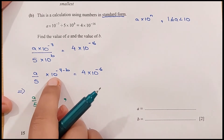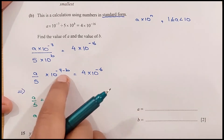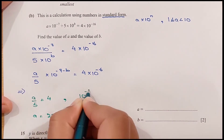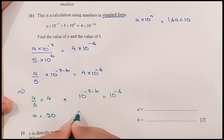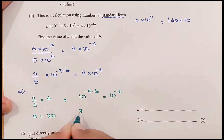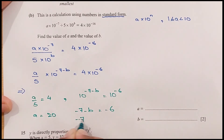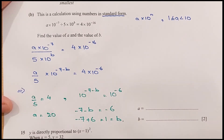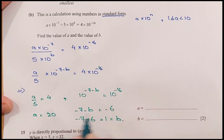For the exponent part, 10 exponent (minus 7 minus B) equals 10 exponent minus 16. When the bases are the same, we can compare the exponents. So minus 7 minus B equals negative 16. Sorry, this is not minus 6 — this is minus 16.